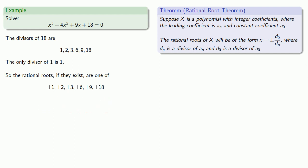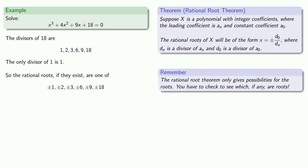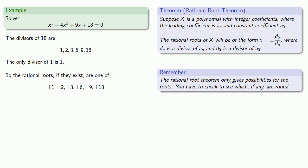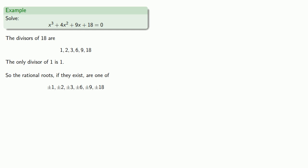The rational root theorem only gives possibilities for the roots. You have to check to see which if any of these are in fact roots. And that means we'll have to check each of these to see if it's a root. Since we want to do this in the hardest way possible, maybe not.